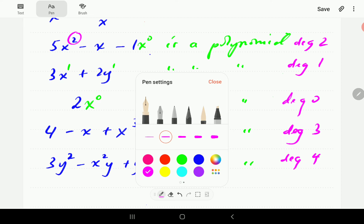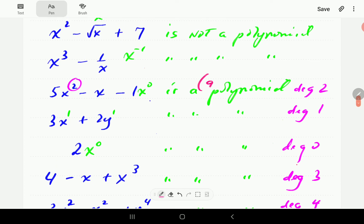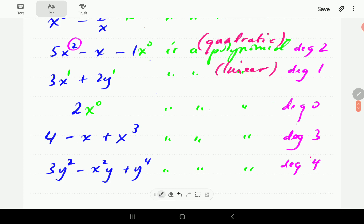So now, polynomials of degree 2 have got a special term given to them. They are called quadratics. So this one is an example of a quadratic. Polynomials of degree 1 are called linear functions. Polynomials of degree 0 are called constants. Polynomials of degree 3 are called cubics.